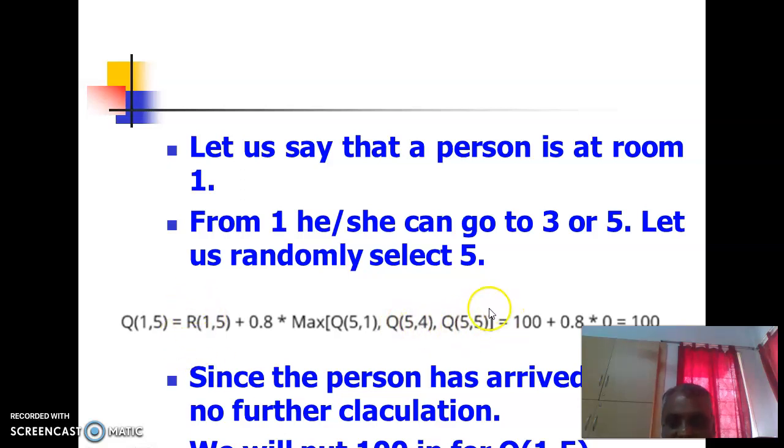So R(1,5) is 100, you can see in the table or matrix, plus 0.8 into 0 it is 100. We will substitute for Q, we will enter this 100 at the Q(1,5) entry location, so we will write 100. Now the person has arrived at 5, there is no further calculation required. We will put 100 in for Q(1,5).